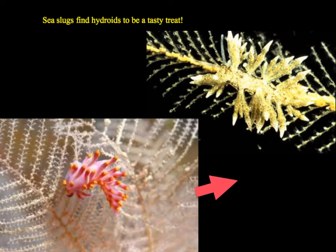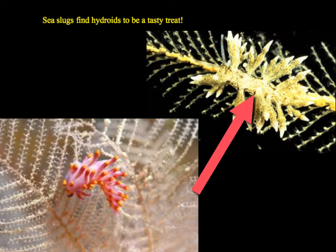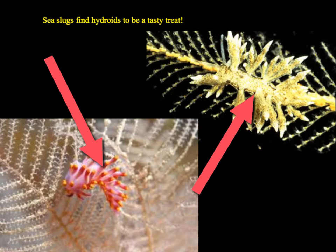Ecologically speaking, these are sea slugs, and the sea slugs are feeding on the hydroids. They eat the hydroids and take their stinging cells — but they actually don't digest them. Instead, they move them to the gills sticking up off their backs and incorporate those stinging cells into their body, making them unpalatable to potential predators. It's a great co-opted defense mechanism from eating the hydrozoan stinging cells.